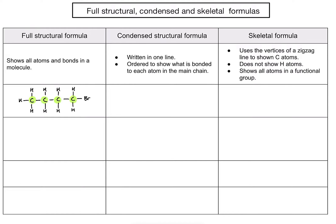Going from left to right: the first carbon has three hydrogens, so I start with CH3. The second carbon has two hydrogens, so I write CH2. The third carbon also has two hydrogens, CH2. The final carbon has two hydrogens and the bromo functional group, so I write CH2Br. This saves time — I don't need to draw the bonds, but it still gives lots of information about the structure.